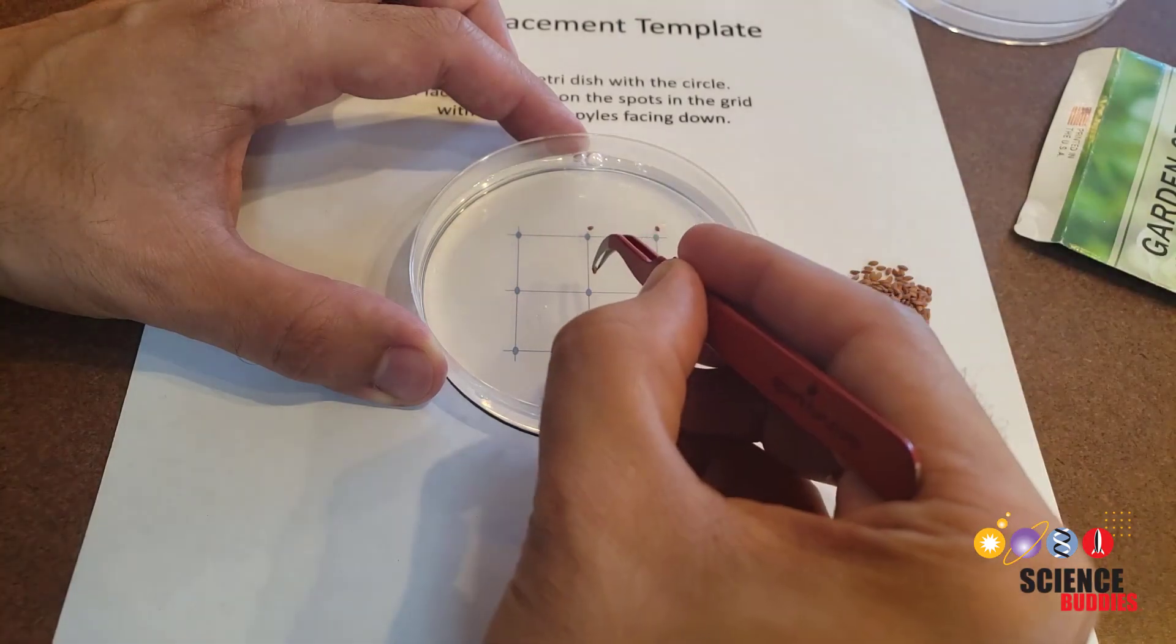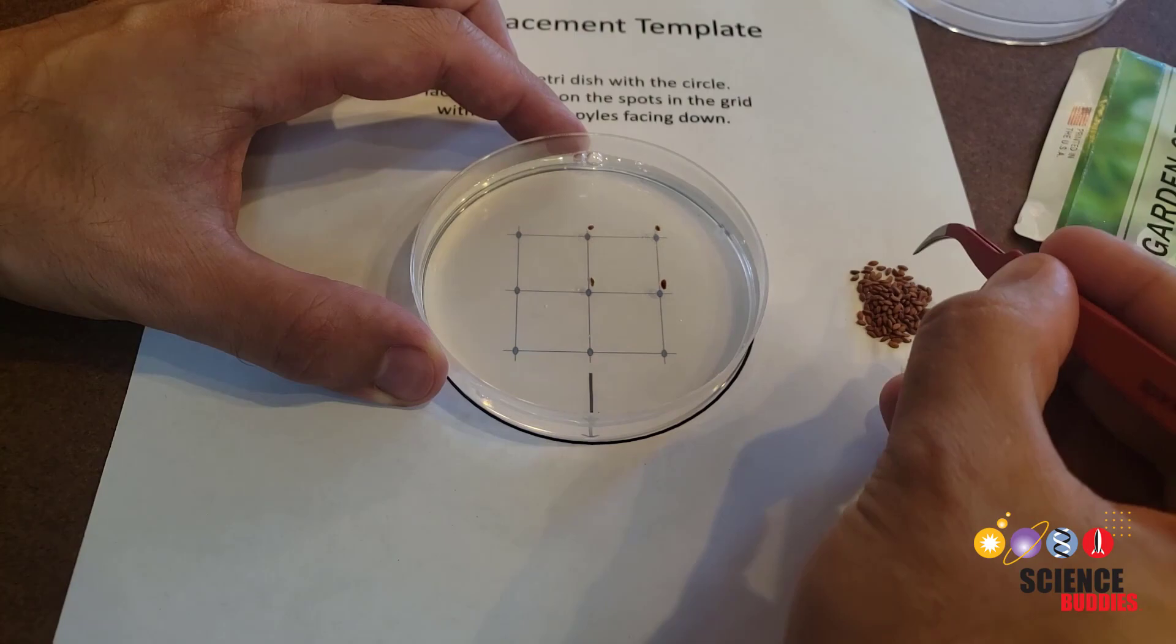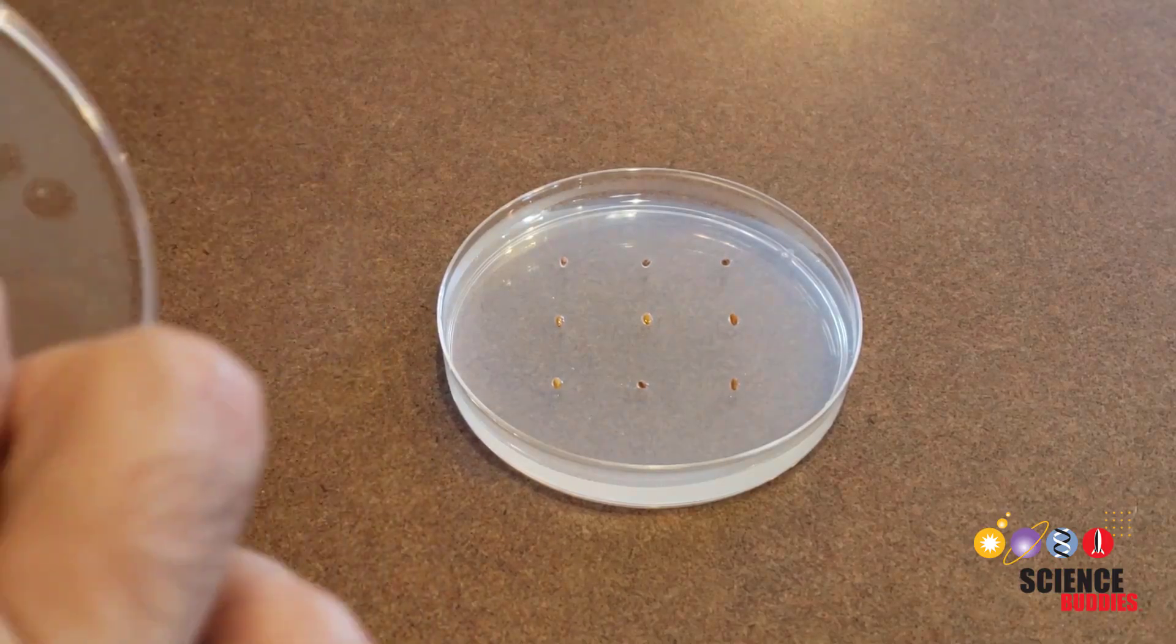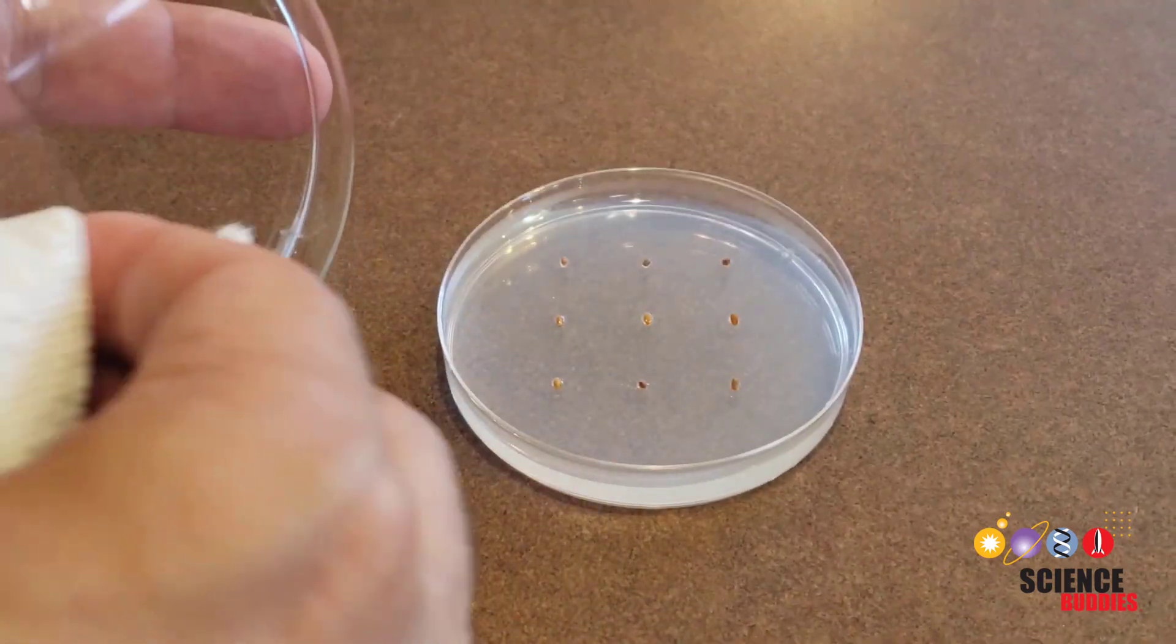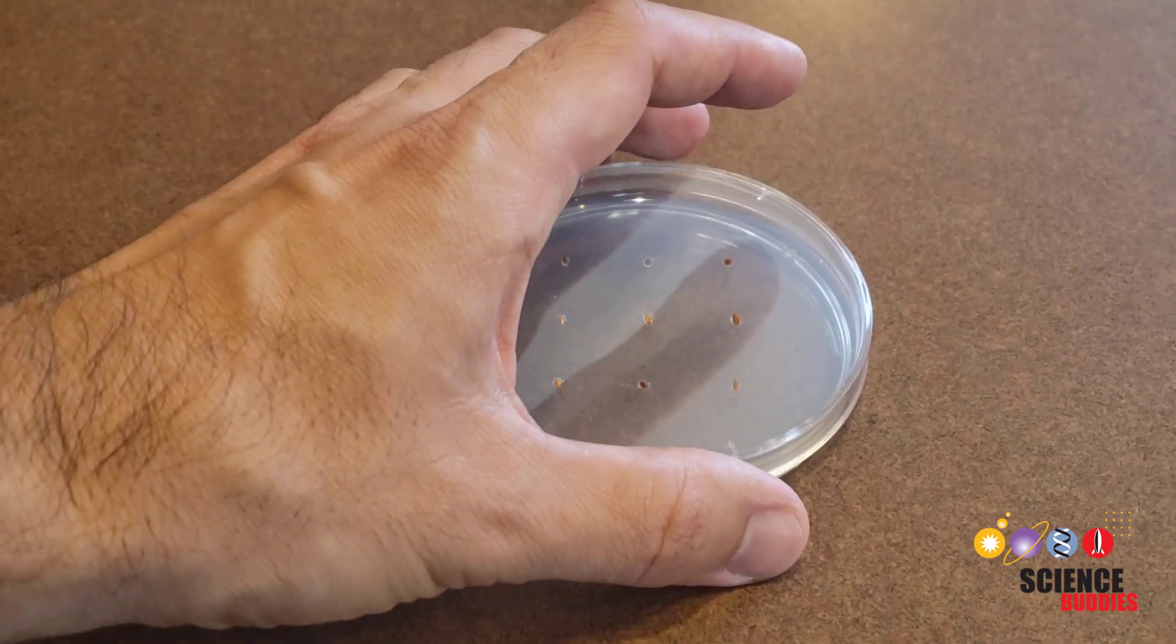You can also use a permanent marker to draw an arrow on your petri dish indicating the direction of the micropiles. Once you have embedded all of the seeds, use a paper towel to wipe off any condensation on the inside of the lids and place the lids back on the petri dishes. You are now ready to perform a seed germination experiment.